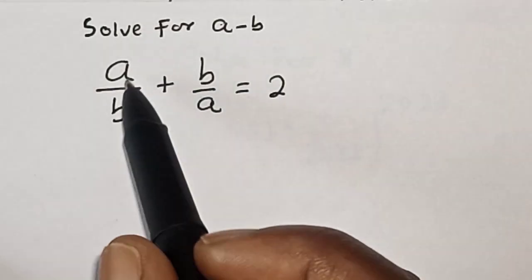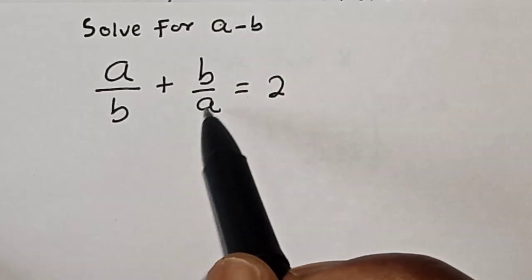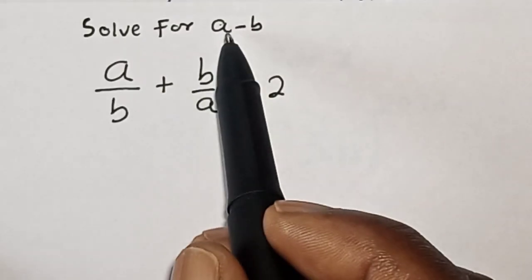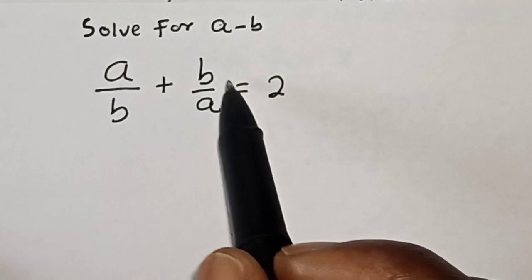Solve for a minus b: a over b plus b over a is equal to 2. Hi everyone, welcome to my class. In this class, we want to find the value of a minus b from this given equation.